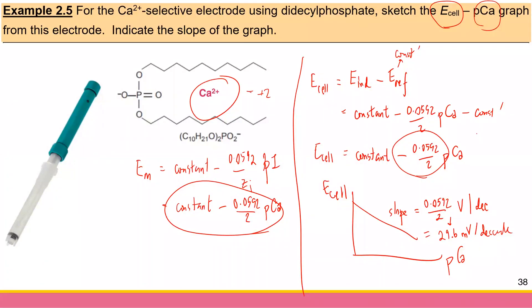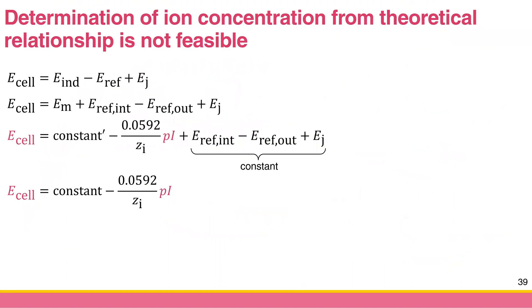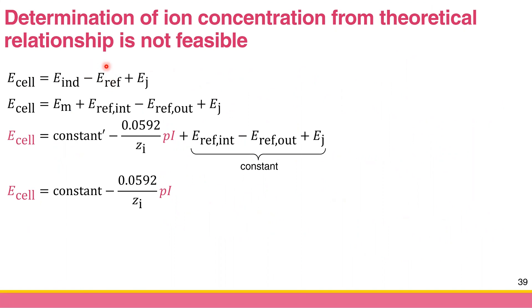We talked about all three types of membrane electrodes. Now, how can you use these electrodes for quantitative analysis? That's the last section of this chapter. What I want to show you here is that you cannot really find the ion concentration theoretically from the Nernst equation and membrane potential equation.